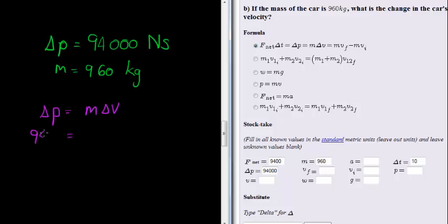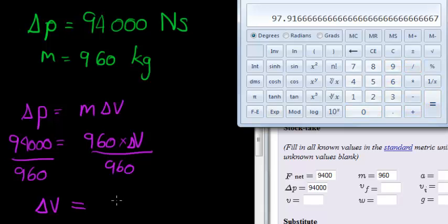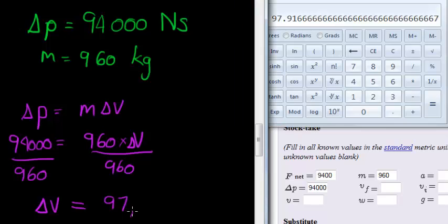So substituting in here, we get that 94000 is equal to 960 times what, times what velocity, or change in velocity. So divide both sides by 960, and what do we get? Change in velocity is equal to 94000 divided by 960, and we get 97.92 meters per second. And you should be fine entering that on your own.